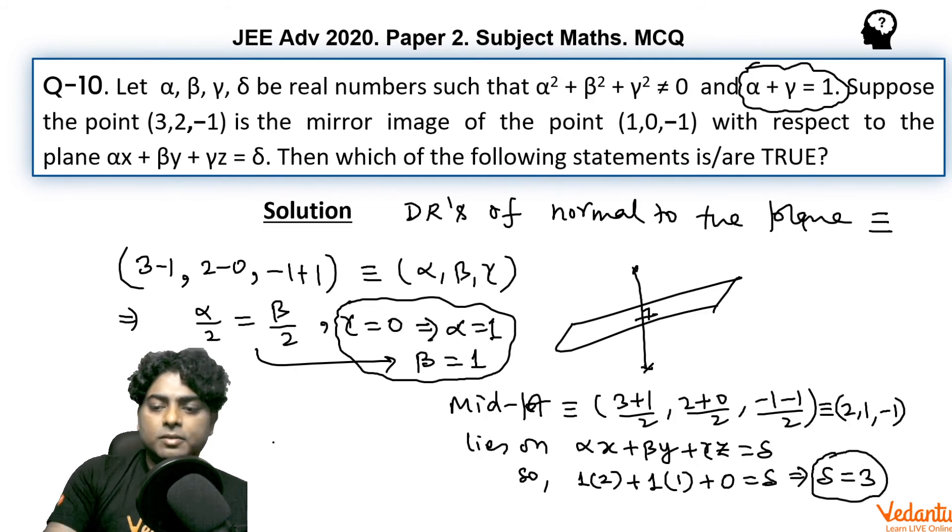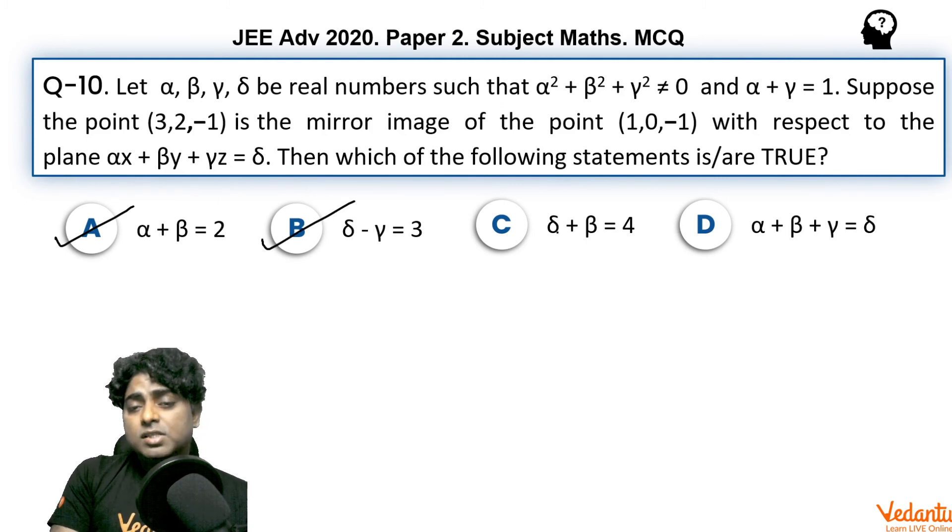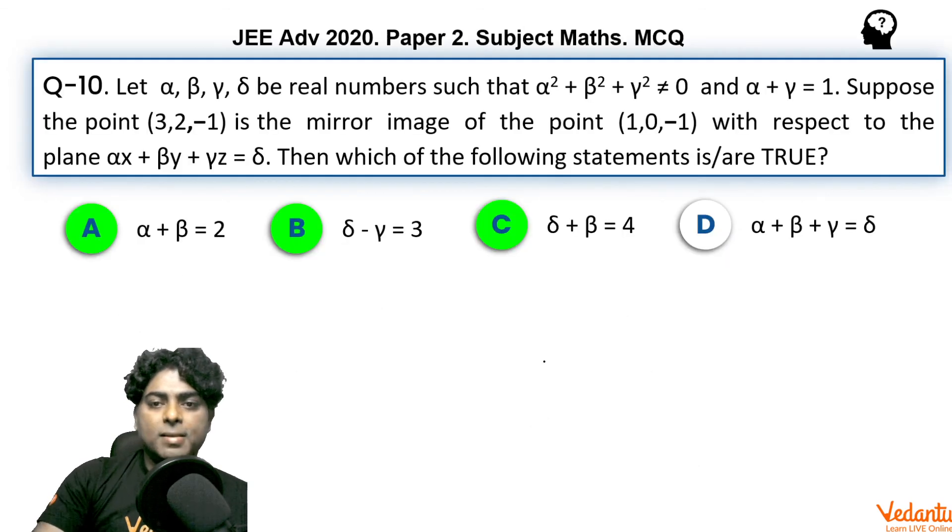Now coming to the options - so 1, 1, 0, and 3. α was 1, β was 1, option A is correct. δ was 3, γ was 0, so 3-0, option B is correct. δ was 3, β was 1, 3+1=4, C is also correct. α, β, γ were 1, 1, 0, so the left-hand side is 2, but δ was 3, so option D is not correct. So here you can see the answer must be A, B, and C.